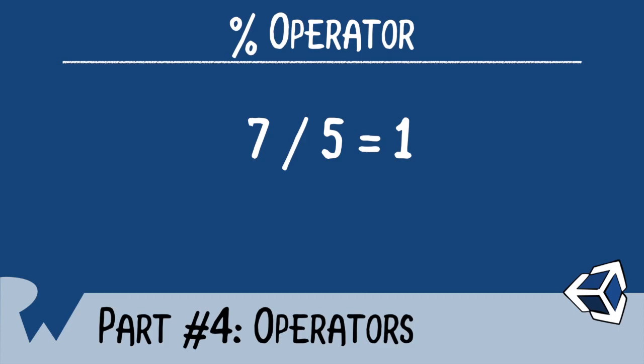If you want to know the remainder, that is, the stuff that's left over, you use the modulus operator. Thus, 7 modulus 5 gives us 2. That is, after 7 is divided by 5, we have 2 left over.